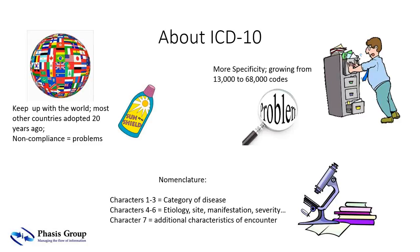ICD-10 is an expansion of codes — literally fivefold — going from 13,000 to 68,000 codes, and that number will keep growing. That means you're going to be using more codes in everything you do, which is why claim forms expanded from four to eight diagnosis slots and electronic claim formats expanded to allow up to 99 ICD codes. Quite often more codes will apply to a specific encounter or claim.